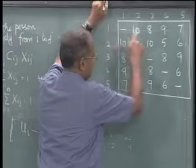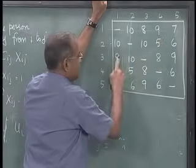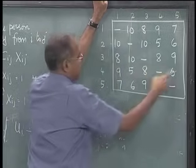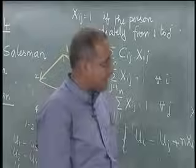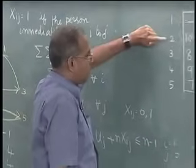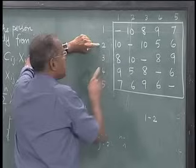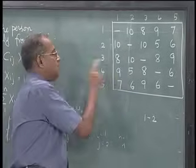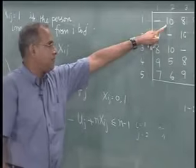We branch from the node with the minimum lower bound, which is x_15=1 with lower bound 31. From this node, we already have arc 1→5 fixed, so we create 3 more branches from city 2: x_21=1, x_23=1, and x_24=1. We exclude x_22 (subtour) and x_25 because city 5 is already reached via arc 1→5. We remove rows 1 and 2, columns 5 and 1 from the matrix, leaving a 3×3 submatrix. Since we have 1→5 and 2→1, arc 5→2 would create a subtour and is set to infinity.